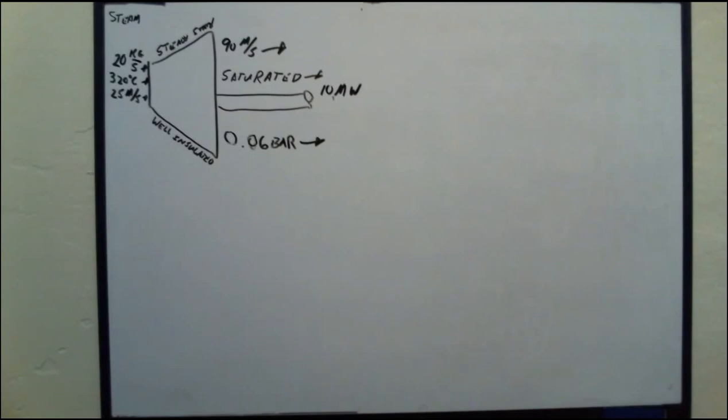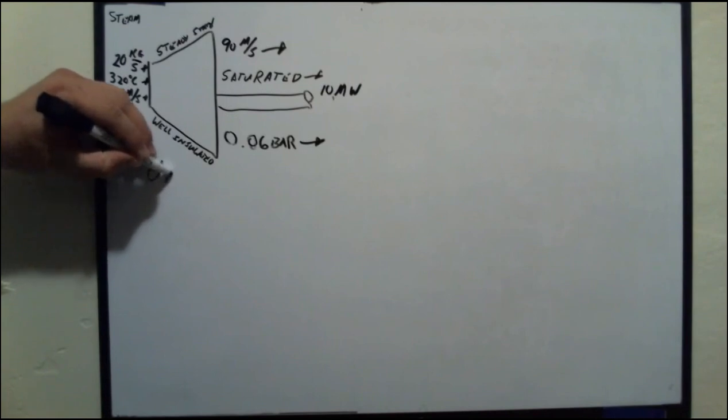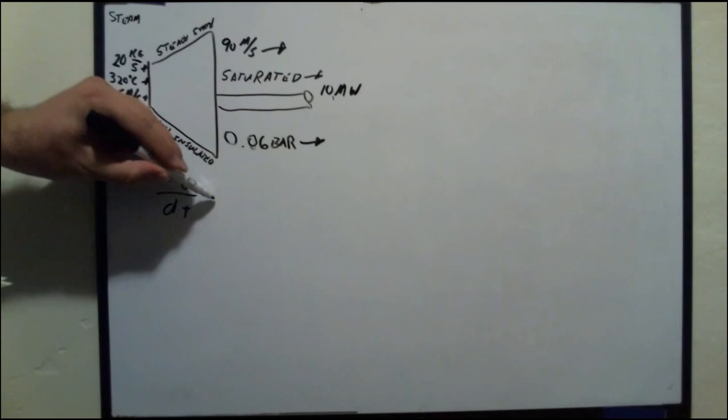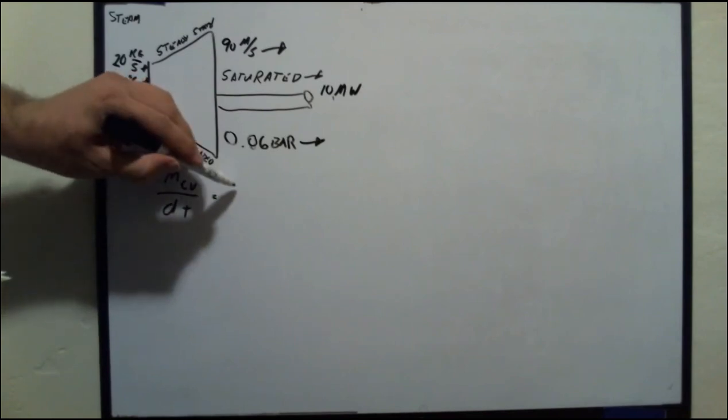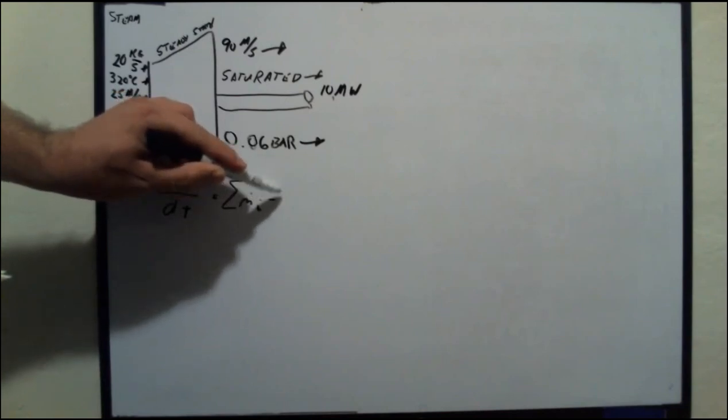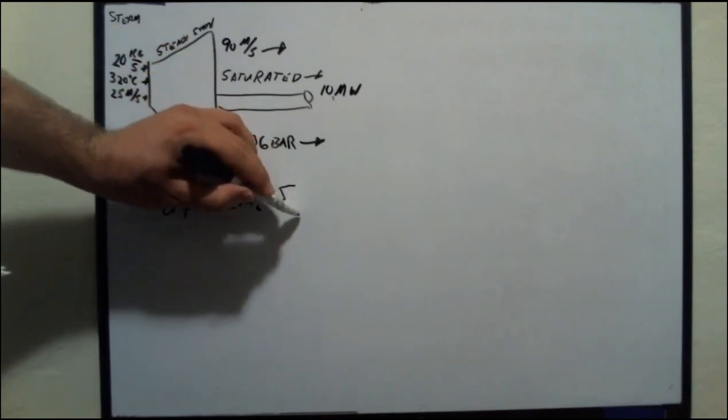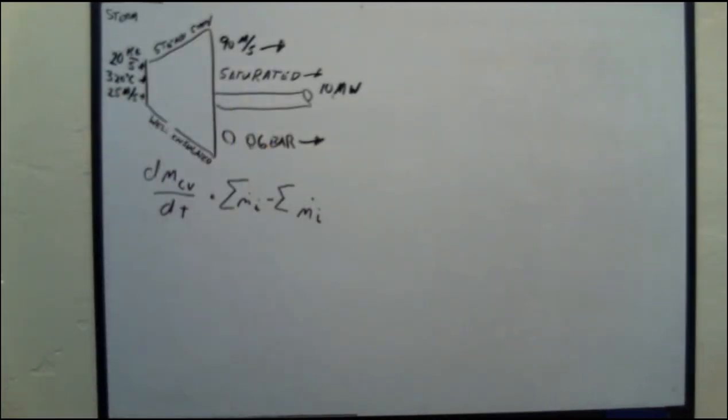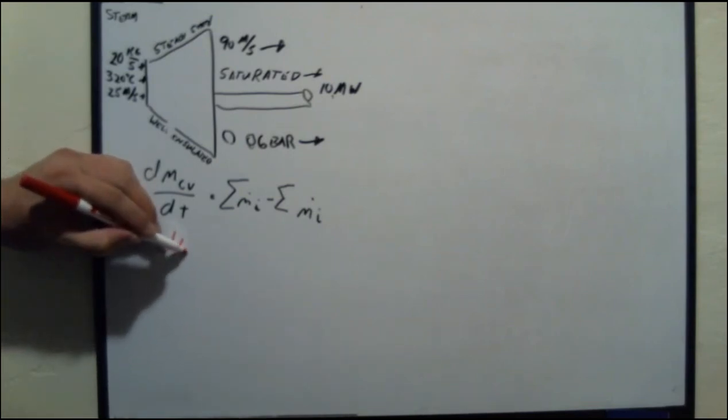My first fundamental equation will be a control mass. So I'll say differential with respect to time equals the sum of the mass flow rate in minus the sum of the mass flow rate out. And what's my second fundamental equation that really applies here? My second equation, which I will write in red, is the control of energy.